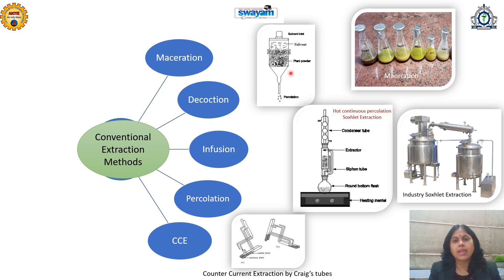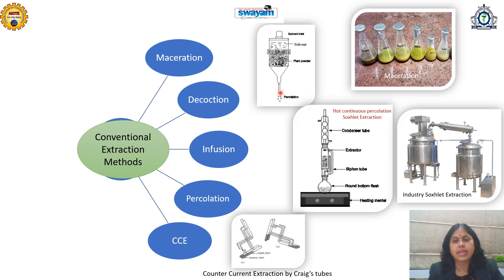In percolation, a specially designed apparatus called a percolator is used. Percolation means the solvent passes through the plant powder or plant material. Either fresh or dry plant material is packed into the percolator, then soaked in solvent for 4 hours. After 4 hours, solvent is poured and when it starts dripping from the percolator, the extract is collected while continuously adding fresh solvent as required.